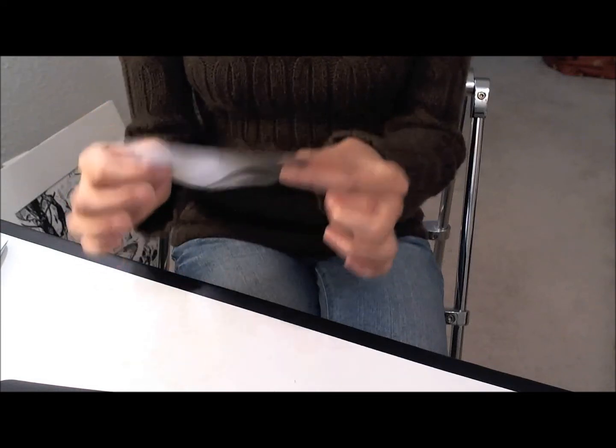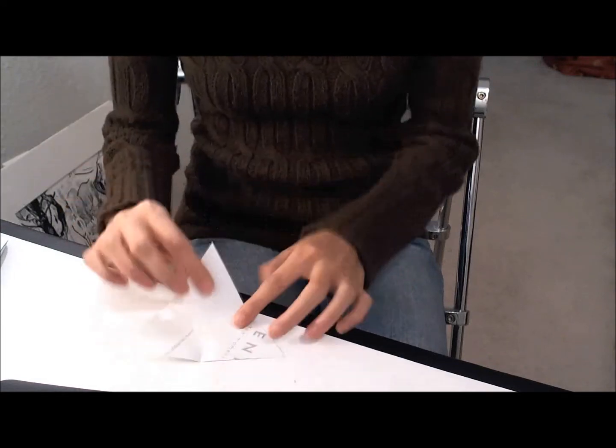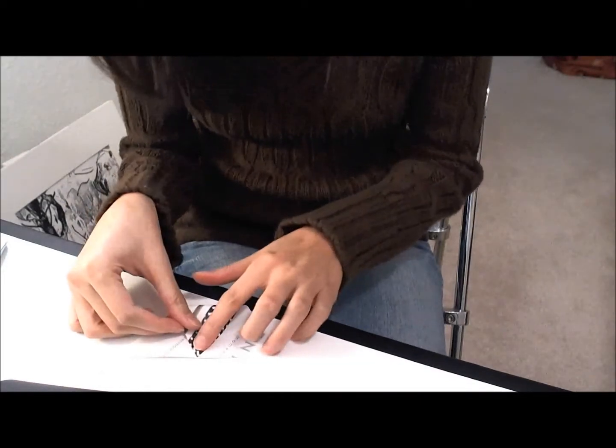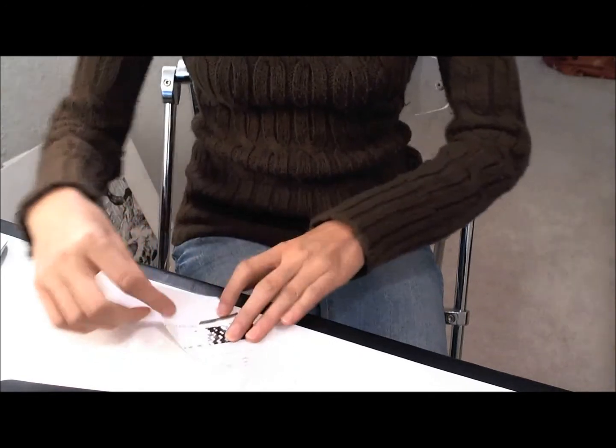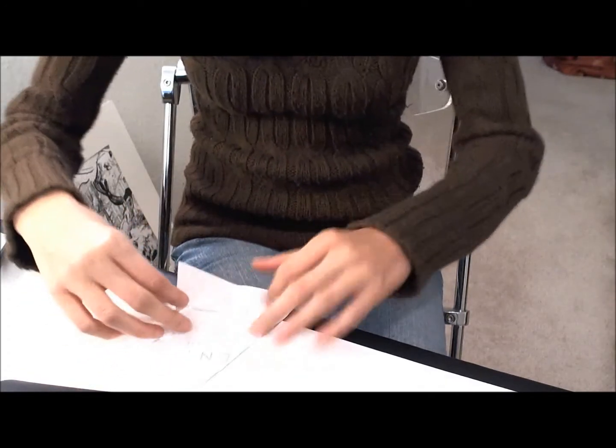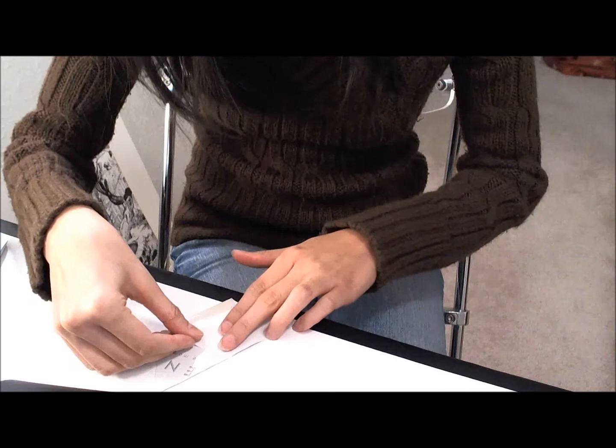After you do that, fold each point down to the center of the other side and crease it so that you then have a smaller triangle.